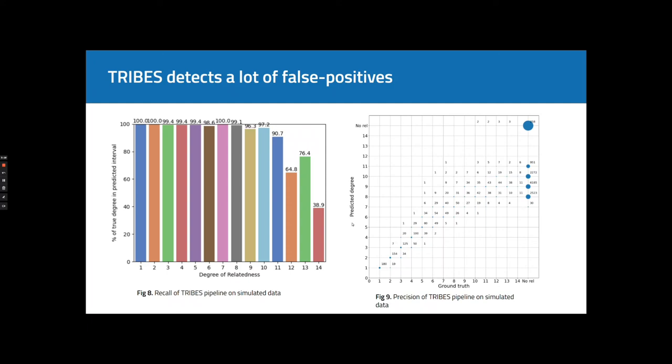And basically, Stripes predicts almost every pair of samples as relatives in our simulated dataset.